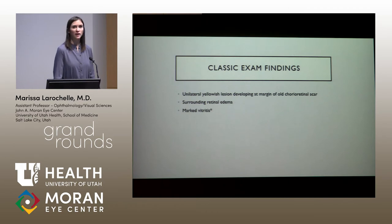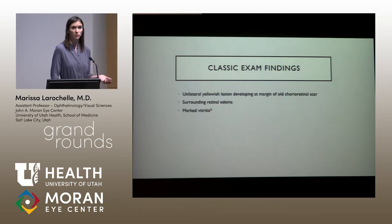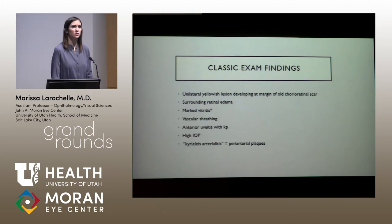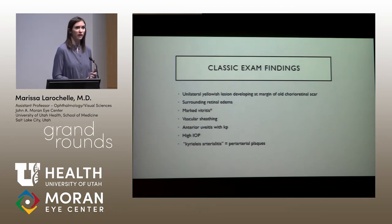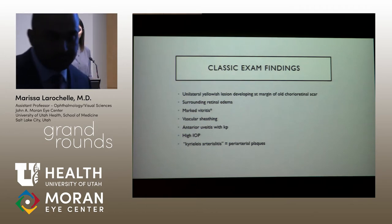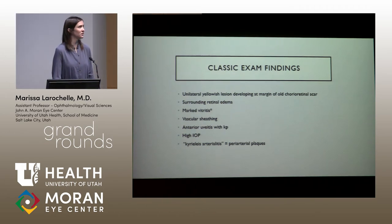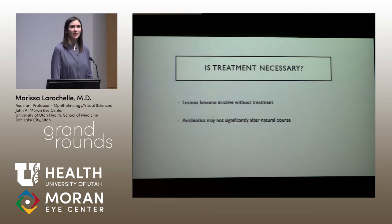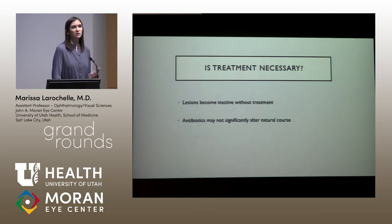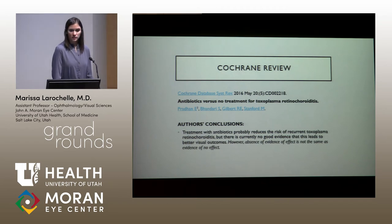Exam findings include marked vitritis — though sometimes just a clump of vitreous cells overlying the area of activity, and if immunocompromised there may be a lack of vitritis. Vascular sheathing can be separate from the area of activity. Anterior uveitis can show fine or mutton fat KP, elevated IOP, and periarterial plaques. Regarding treatment: in immunocompetent patients, lesions become inactive with well-defined borders within six to eight weeks even without treatment. There is little firm evidence that antimicrobial therapy alters the natural course or visual outcome in immunocompetent patients.